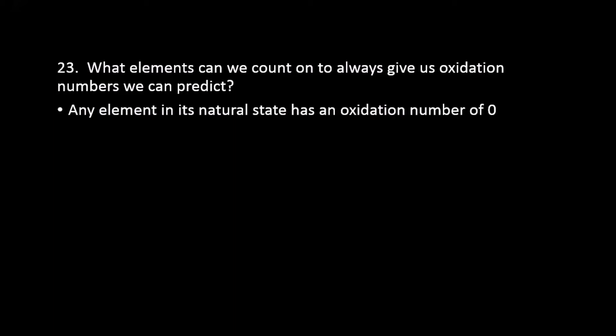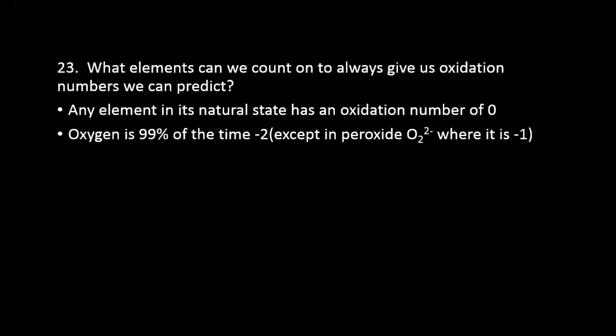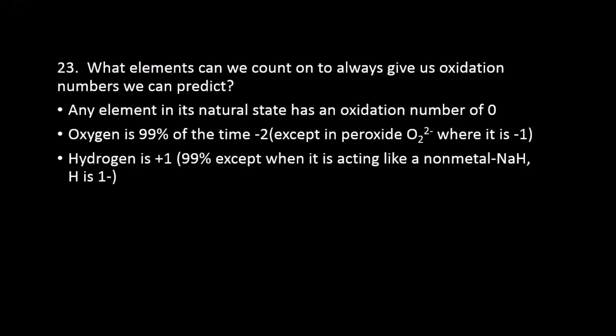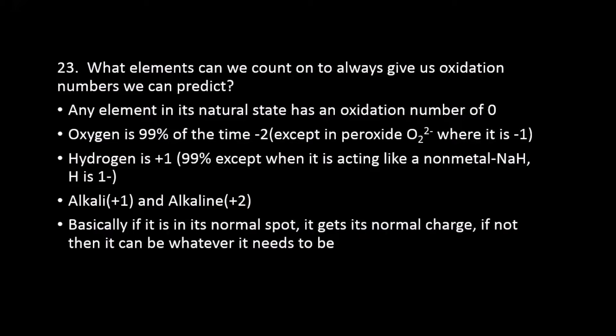Here are the rules for oxidation numbers. Number one: any element in its natural state has a charge of zero. Oxygen 99% of the time is negative two, except when you see it as peroxide, in which case it's negative one. Hydrogen about 90% of the time is plus one, but sometimes when bonded to a metal it's minus one. Alkali metals (first column) are plus one, and alkaline earth metals (second column) are plus two - if it's in a spot where we know its charge, that's its charge.